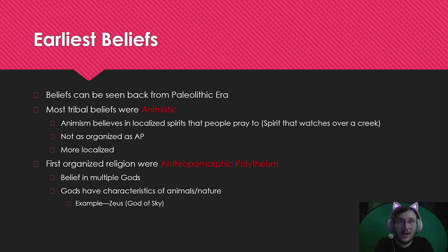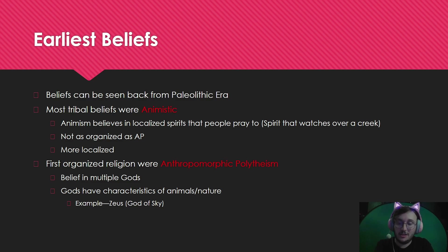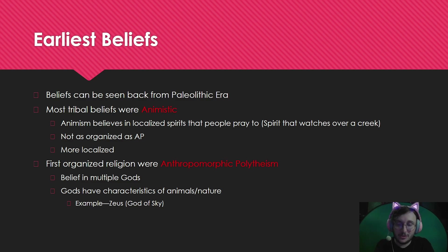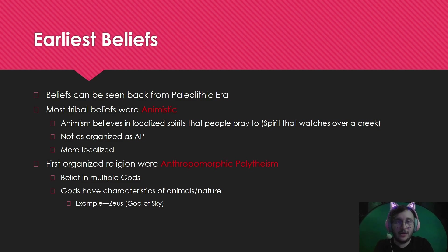The very first truly wide-scale organized religions are going to be anthropomorphic polytheism — a belief in multiple gods. Those gods will have characteristics of animals, nature, and sometimes humans. For example, Zeus the god of the sky, Poseidon the god of the ocean. Greek and Roman gods are the stereotypical example of anthropomorphic polytheism.